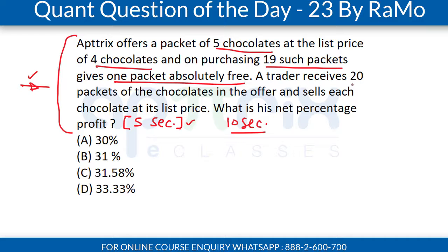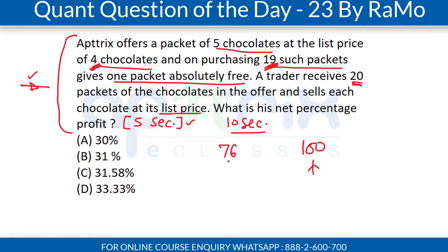So the first thing when reading the question: the trader is receiving 20 packets and is going to sell at the list price. Each packet contains 5 chocolates, so he is going to charge for 100 chocolates in total. But let's see how much he actually paid. He paid for only 19 packets, and that too for only 4 chocolates per packet, because he got 1 chocolate free in every packet. He also got 1 packet free when he purchased 19 packets. Therefore, he paid the price for only 76 chocolates.